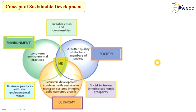Sustainable development can be represented graphically or diagrammatically. It is practiced by society, environment, and economy together to achieve good results. For environment, we set long-term environmental goals. For society, we aim for a better quality of life for all members. For economy, economic development is combined with sustainable transport systems to bring solid economic growth.